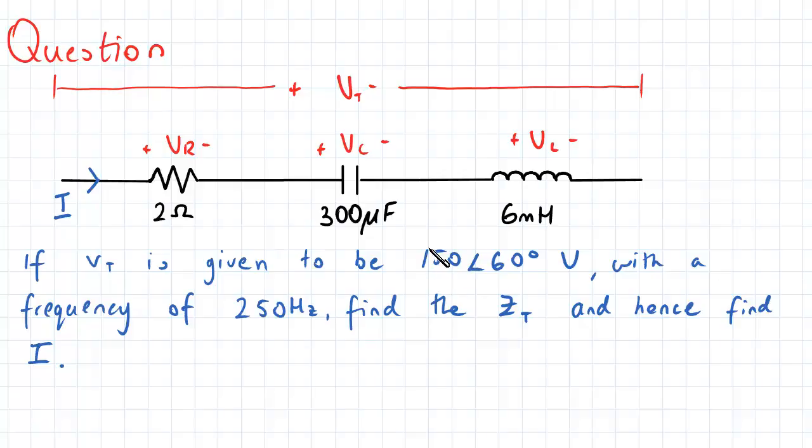...and if VT has a frequency of 250 Hz, then the question is asking us to find the total impedance of this whole section, and hence to find our current.